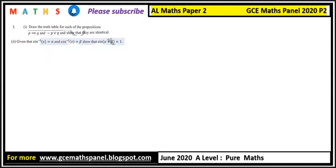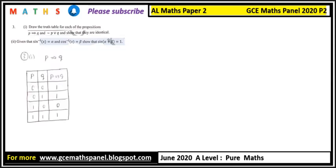We have to make two tables. The first table is for p implies q. P implies q is true whenever both values are the same — when p is true and q is true, p implies q is true, and even when both are false it is true. It is only false when the first is true and the second is false. All other cases give true.